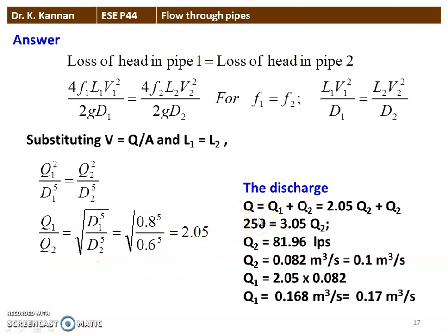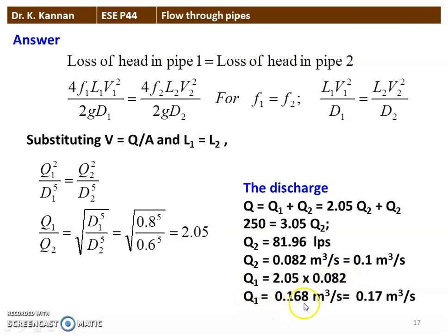The total discharge Q = Q₁ + Q₂ = 250 liters per second. Expressing Q₁ in terms of Q₂: 2.05·Q₂ + Q₂ = 3.05·Q₂ = 250. So Q₂ = 81.96 liters per second = 0.082 m³/s ≈ 0.1 m³/s. Q₁ = 2.05 × 0.082 = 0.168 m³/s ≈ 0.17 m³/s. Therefore Q₁ = 0.17 and Q₂ = 0.1 m³/s.